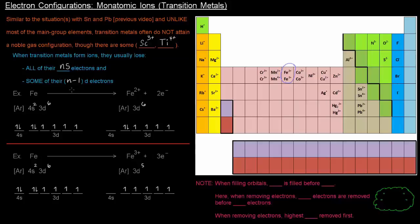In this case, it lost one d electron in the case of forming the 3 plus ion. But in the case of the 2 plus ion, it didn't have to lose any d electrons.